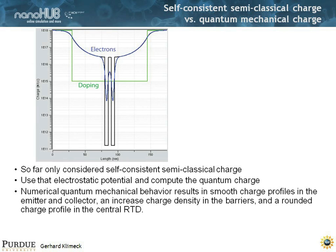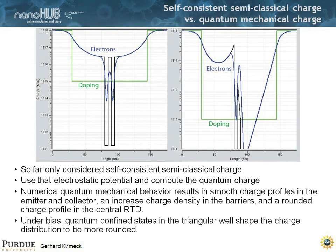The numerical quantum mechanical behavior results in smooth charge in the emitter and collector, charge in the barriers, and a rounded charge profile in the central RTD. Now if you apply a voltage, you see that artificial spike — which we already knew was artificial — getting smoothed out. You have a wave function sitting in the triangular well with a shape to it. So the charge is not piled up against the interface but is actually removed from the interface, as you've seen in some calculations for MOSFETs. The charge in the center of the RTD now looks larger than the semi-classical charge, it's rounded, and you have charge in the barriers.